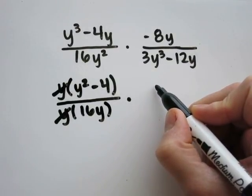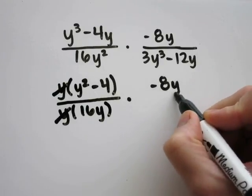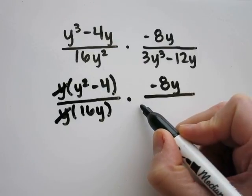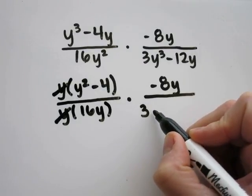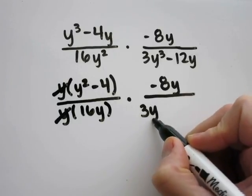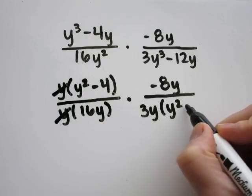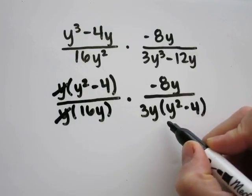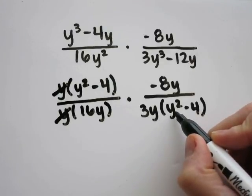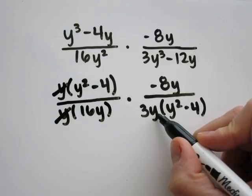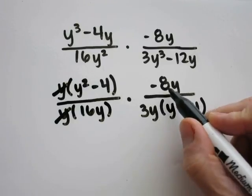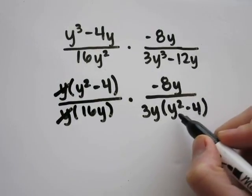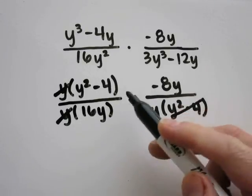Let's move over to this side. 3 and 12 are divisible by 3, so I can factor out a 3. I also can factor out a y. That would leave y squared minus 4. Distribute to double-check: 3y times y squared is 3y cubed, and 3y times 4 is 12y. I can cancel this y squared minus 4.